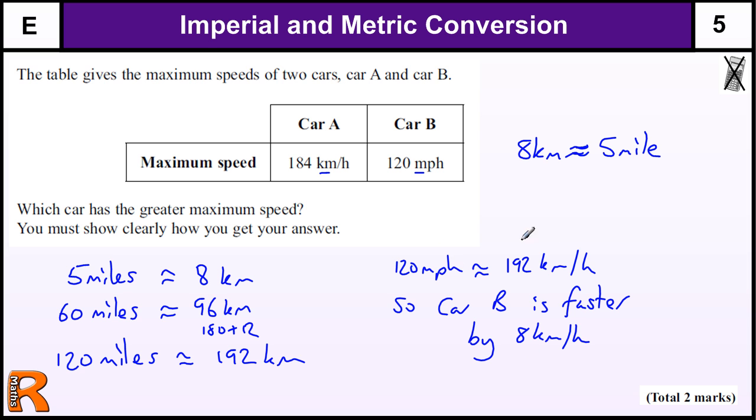But saying car B is faster and showing why gets you two marks. Remember, one mark for the conversion as a special case.